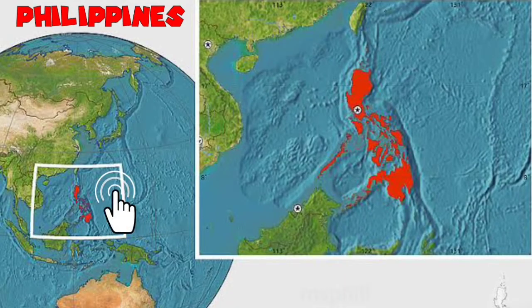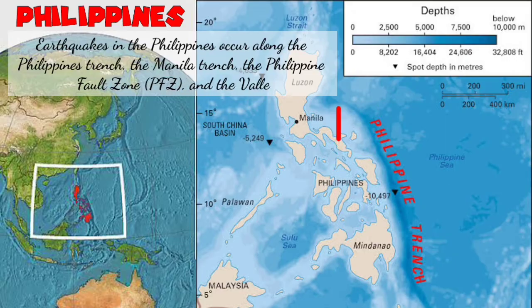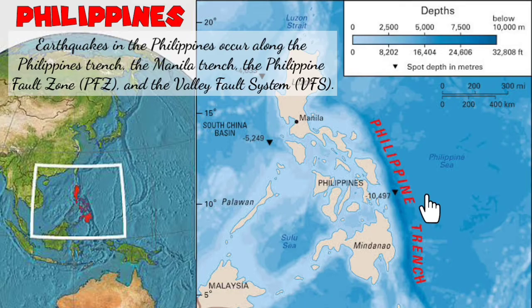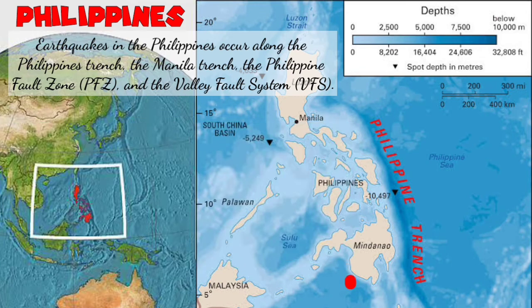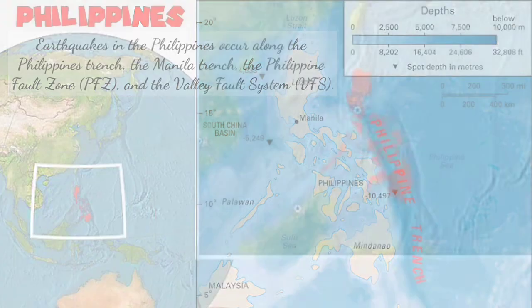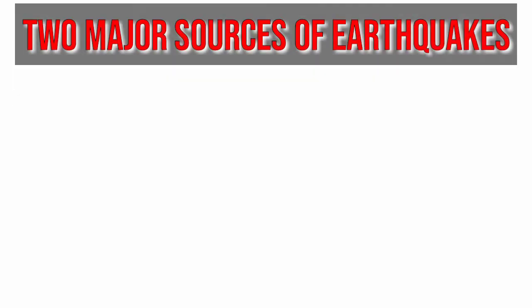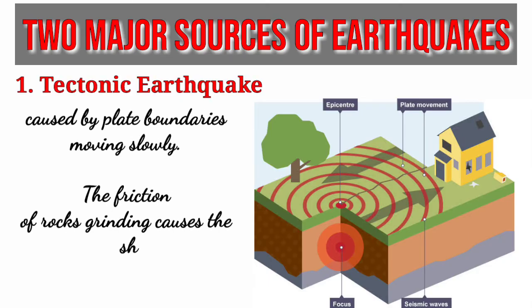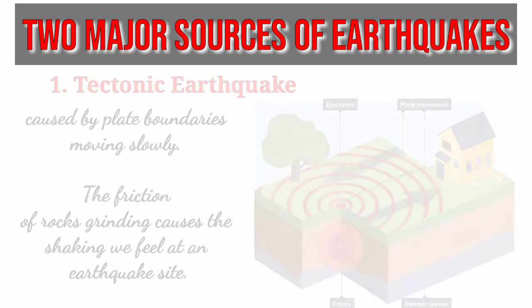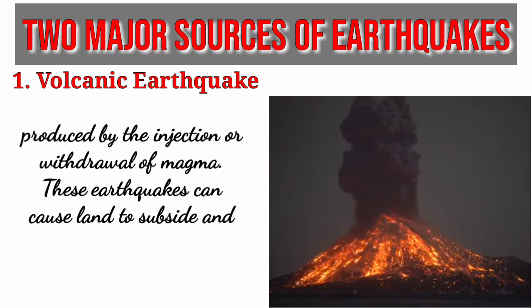The Philippines is located in one of the most active tectonic settings in Asia. Earthquakes in the Philippines occur along the Philippine Trench, the Manila Trench, the Philippine Fault Zone, and the Valley Fault System. The Philippine Trench, the primary source of earthquakes, was built by subduction of the western edge of the Philippine Plate beneath the Eurasian Plate. This trench extends from south of Mindanao Island to Luzon Island in the north. Several destructive earthquakes have occurred in every part of the country. The Central Luzon earthquake in 1990 with a magnitude of 7.6 was the largest seismic event in the Philippines. There are two major sources of earthquakes: first, the tectonic earthquake caused by plate boundaries moving slowly — the friction of rocks grinding causes the shaking we feel; and the volcanic earthquake produced by the injection or withdrawal of magma, which can cause land to subside and produce large ground cracks.